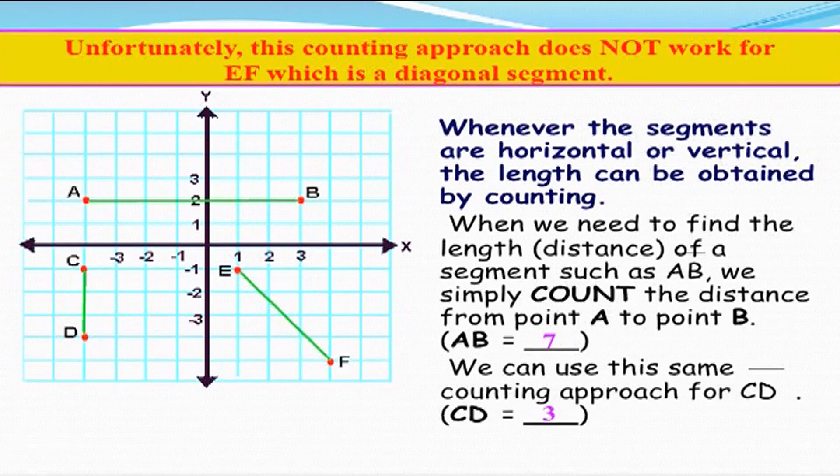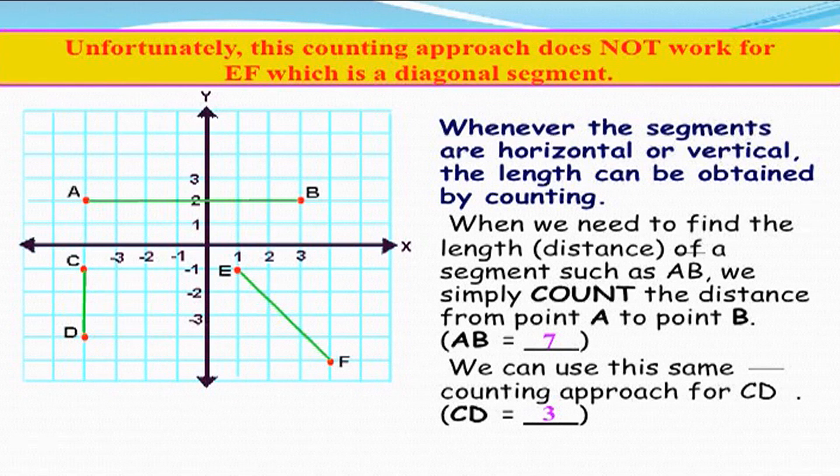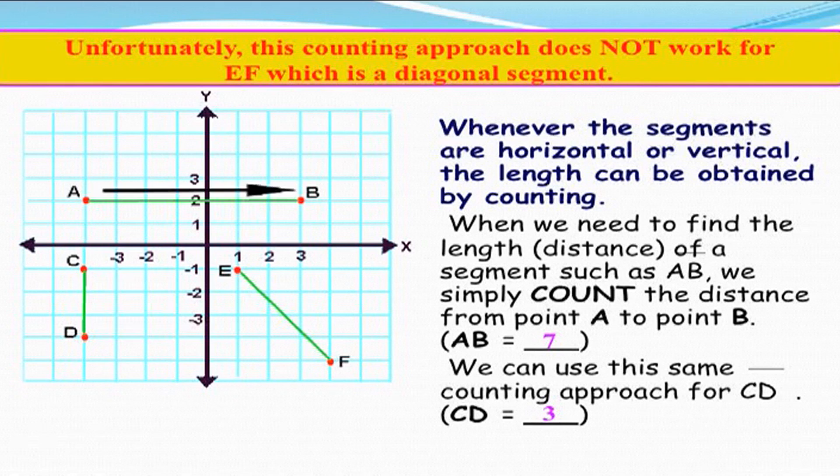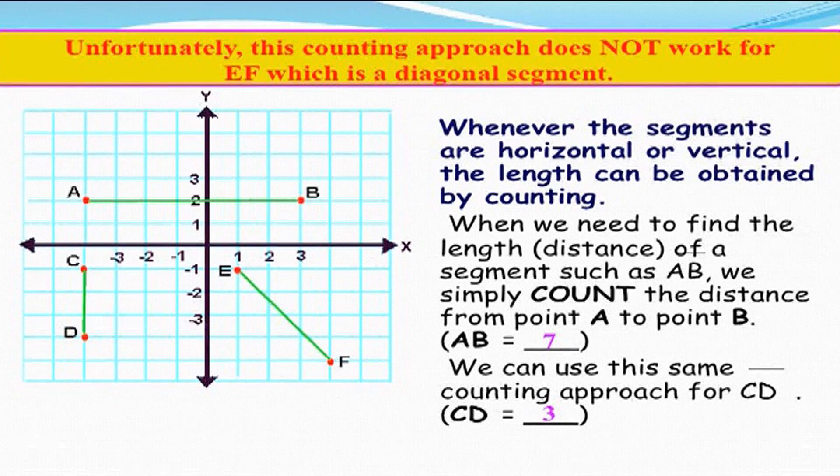A and B, and we have to find out the distance between these two points. When we need to find out the length of a segment such as AB, we simply count the distance from point A to point B. Here we find which is equal to seven units.